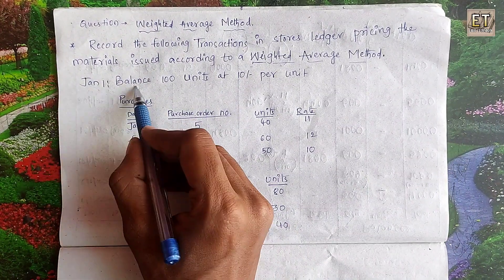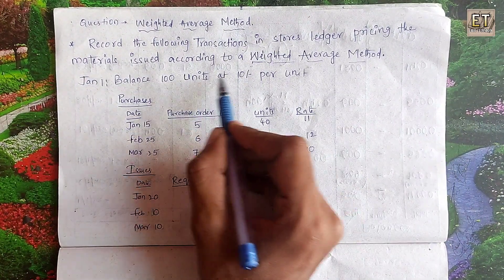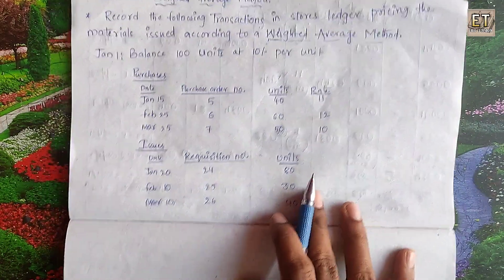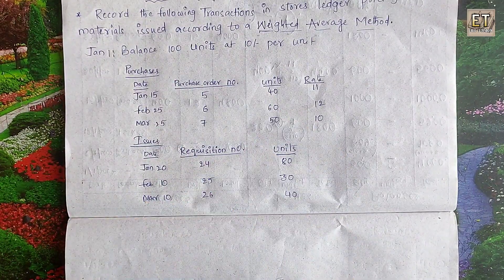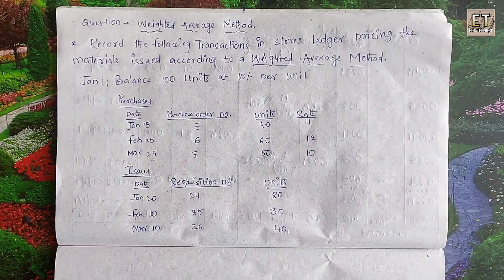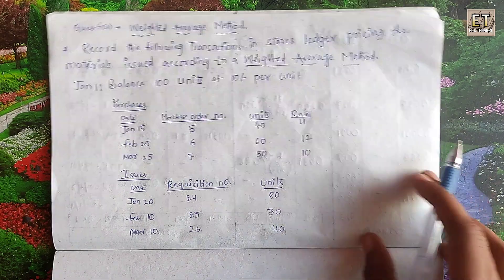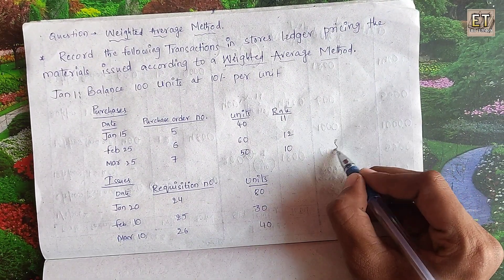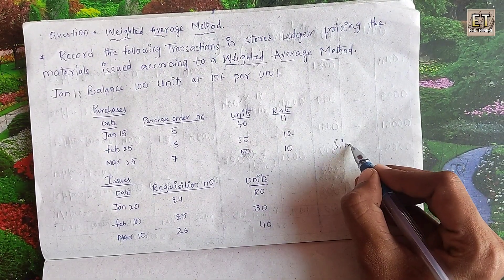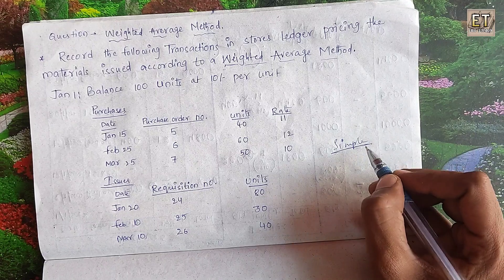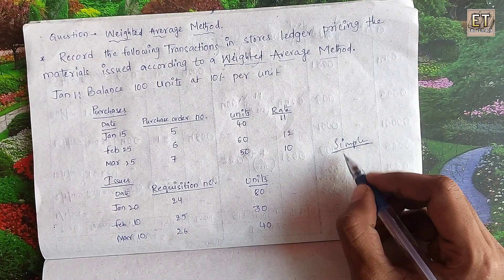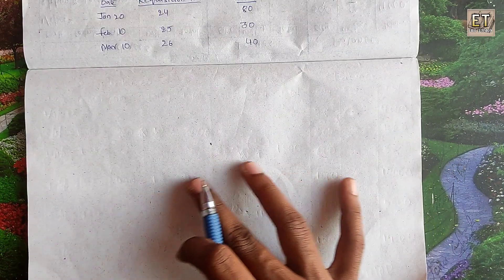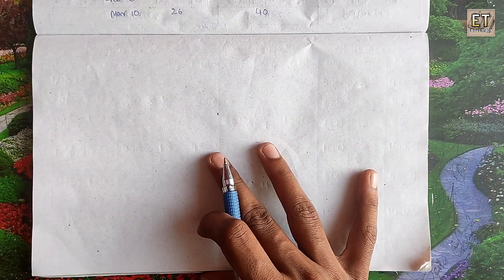The data includes a purchase of 100 units at $100 per unit. We will discuss both sides of the ledger — receipts and issues — and the actual value of $100 per unit, including the issue of these transactions.